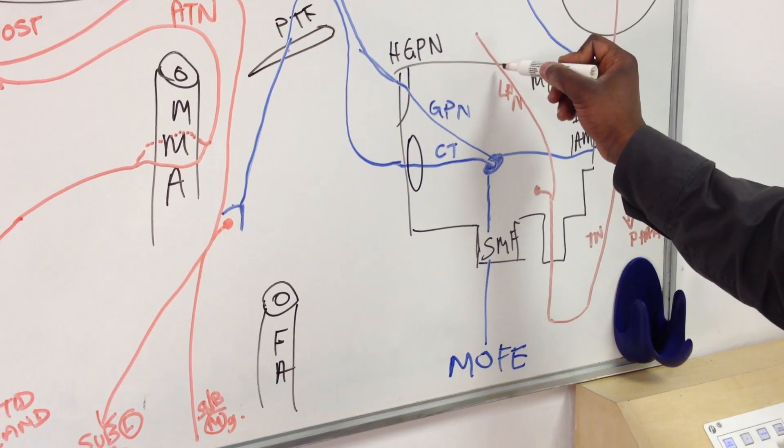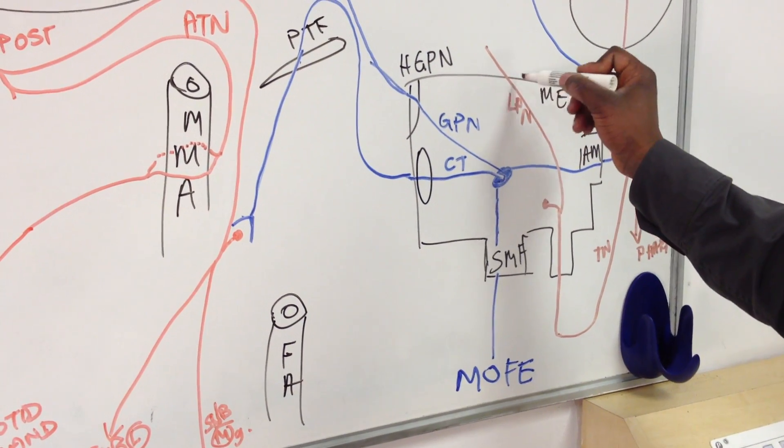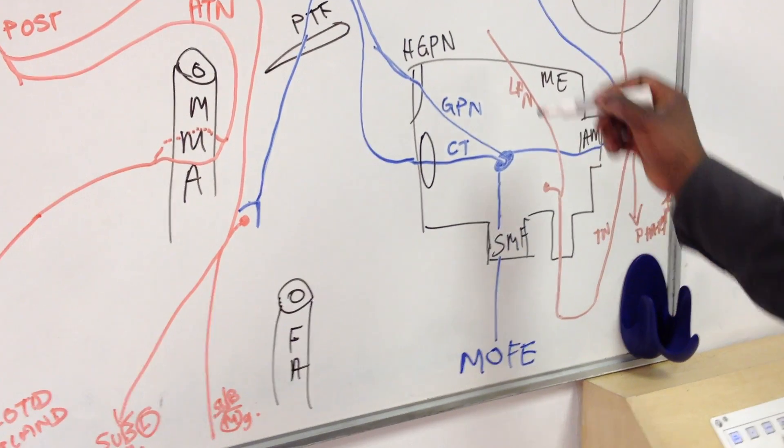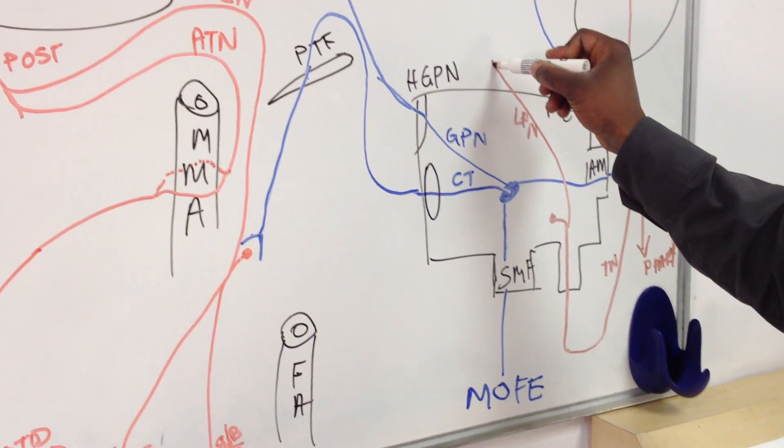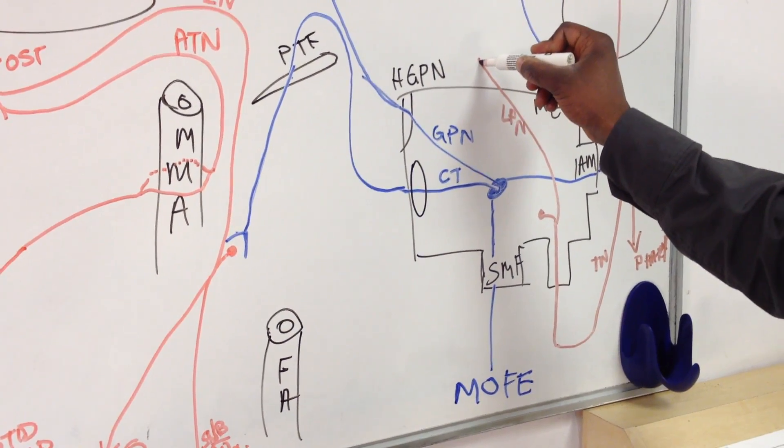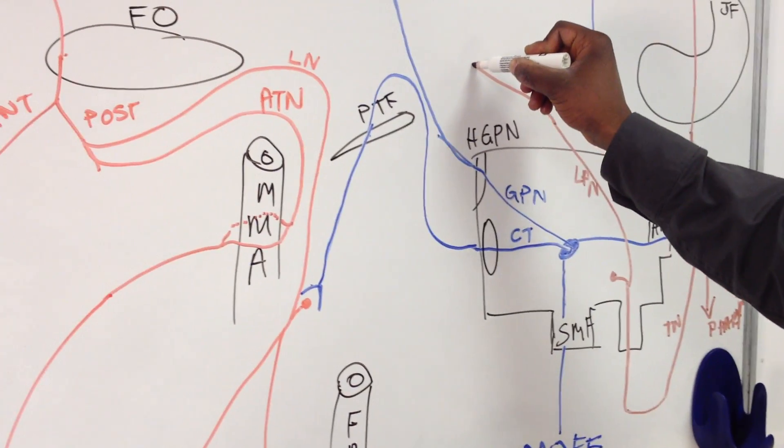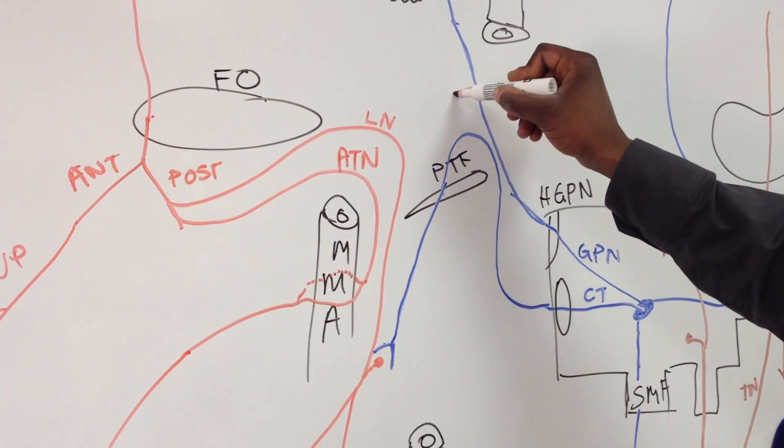That's going to go through a promontory on the roof of the middle ear, but it's going to leave and head up and around.